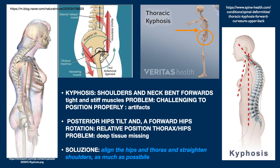In kyphosis cases, shoulders and neck are bent forwards, and the muscles in this anatomy district are tight and stiff. So it gets challenging to properly position the patient's head and neck, and the probability of producing artifacts on the image rises. There is also a forward hip rotation, which could be considered as favorable to show inferior deep tissue, but it is not — on the contrary, as you can realize just looking at the relative position of thorax and hips. Again, we have to align thorax and hips, and straighten the patient's shoulders as much as possible.